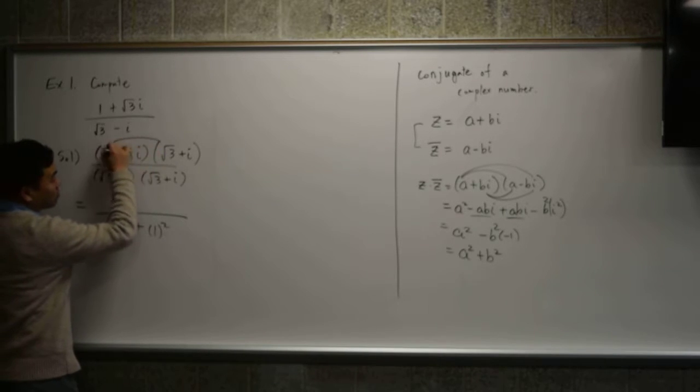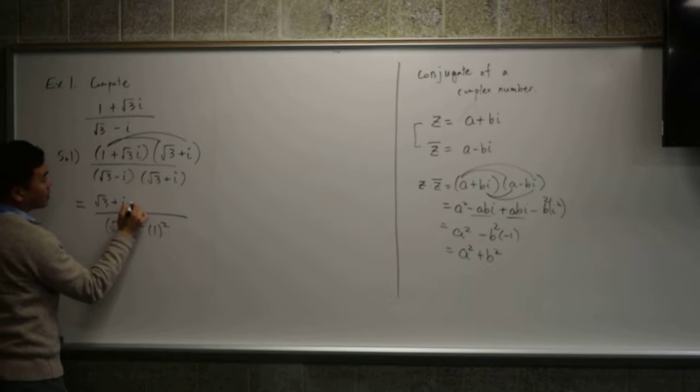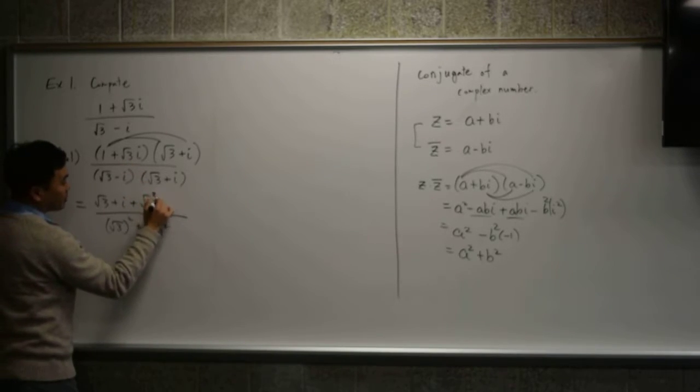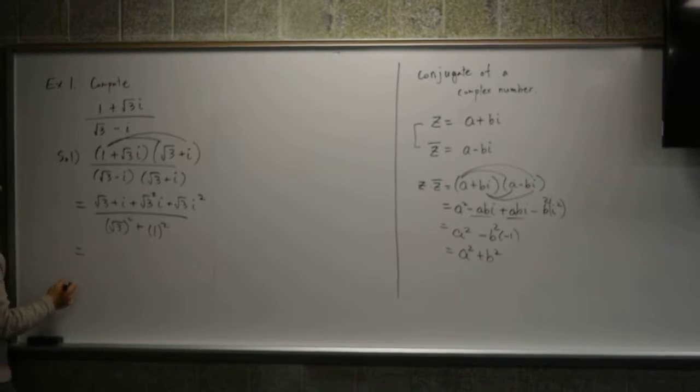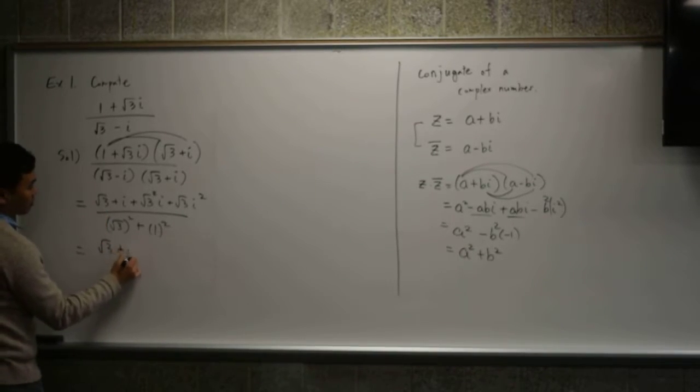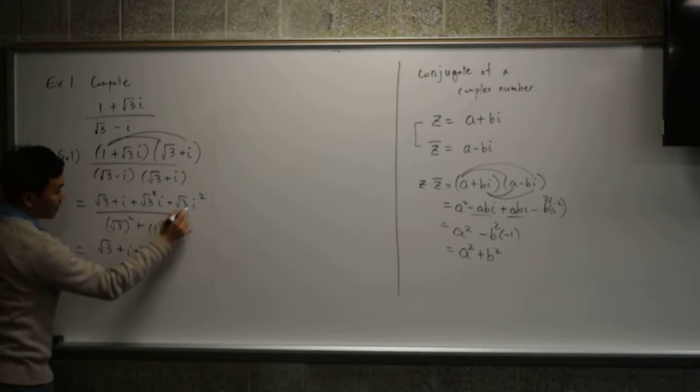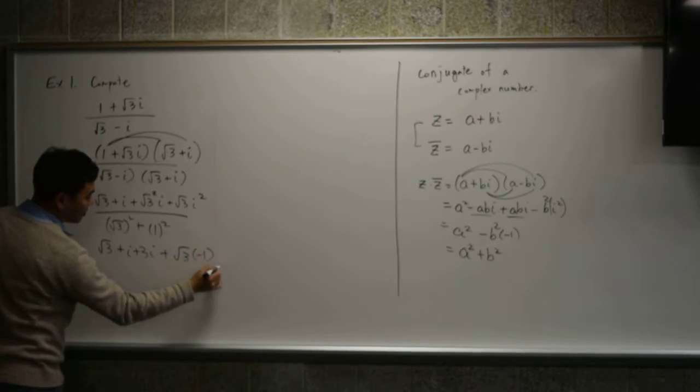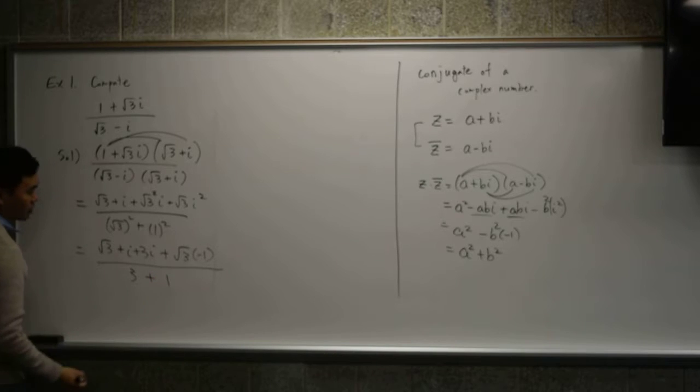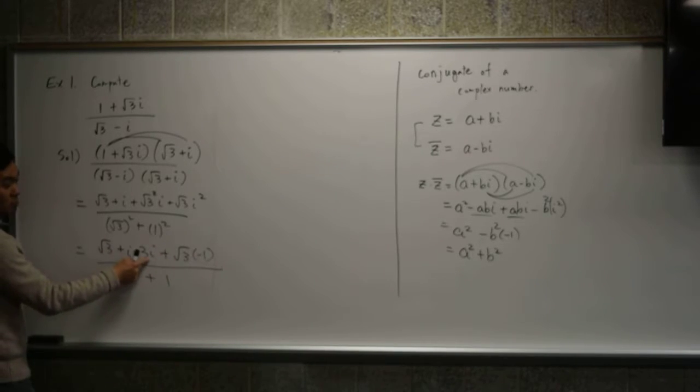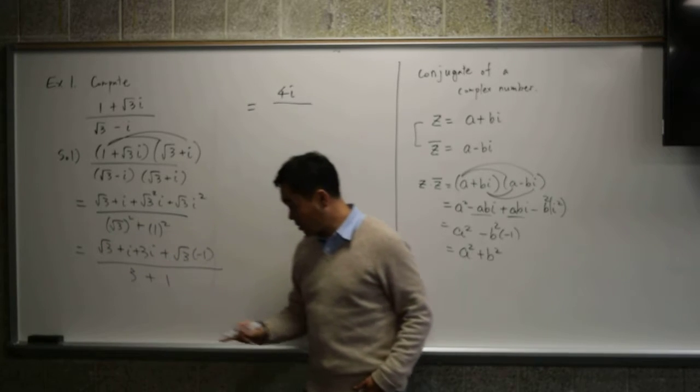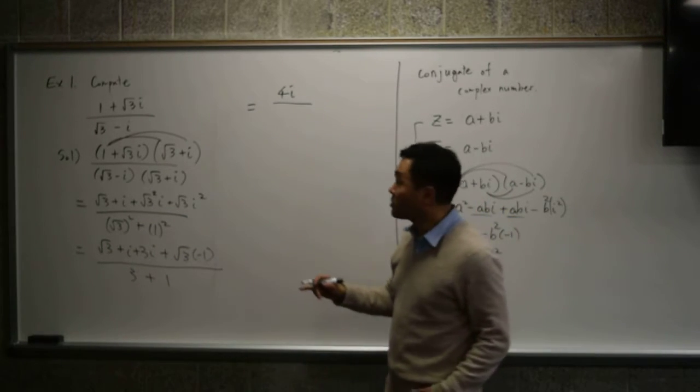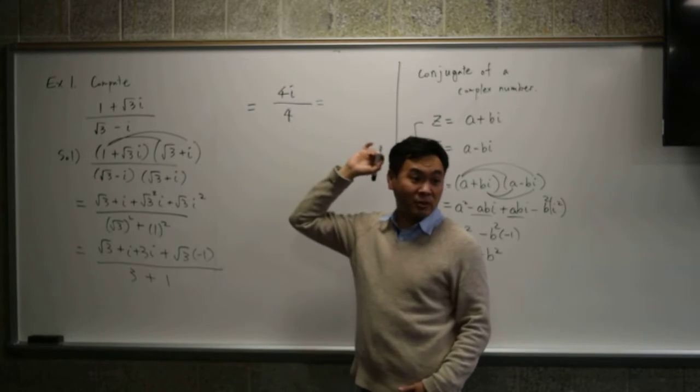For the top one, what do we do? We do the regular FOIL. So √3 plus i plus √3²i. And then this times this, that's √3i². Let's see. That's √3 plus i. √3² is 3i. And i² is negative 1. And √3² is 3 plus 1. And what do you see? √3 and minus √3, these two should cancel each other, right? i plus 3i is 4i. So you end up with 4i on top. After canceling these two, you get 4i on top. On the bottom, what do you see? 3 plus 1 is 4. And 4i divided by 4 is i.